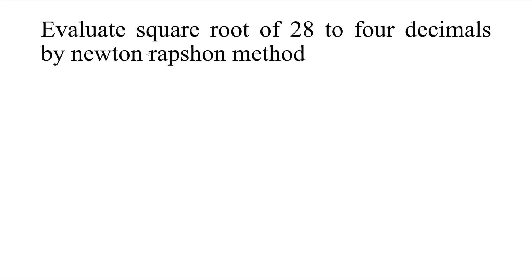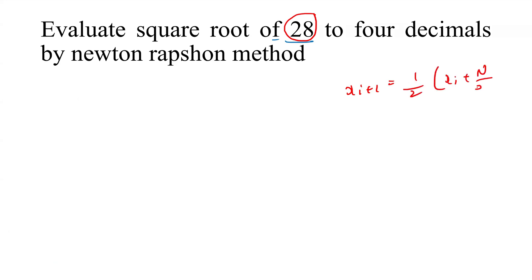This is a question on the Newton-Raphson method: evaluate the square root of 28 to 4 decimal places. For finding the square root of 28, we can use the Newton-Raphson general formula: x_{i+1} = (1/2) * (x_i + n/x_i). This is the general formula for the square root.